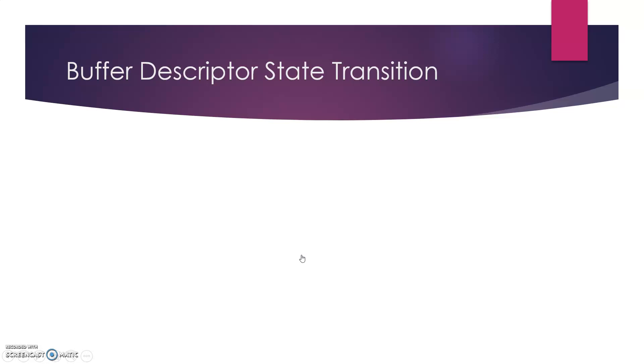Now, the buffer descriptors can be in four different states at any given moment. And they transition in a particular way for the DMA transfers. So let's quickly understand the flow.